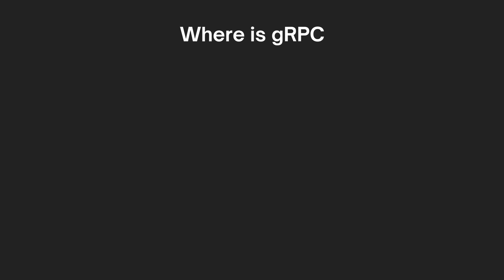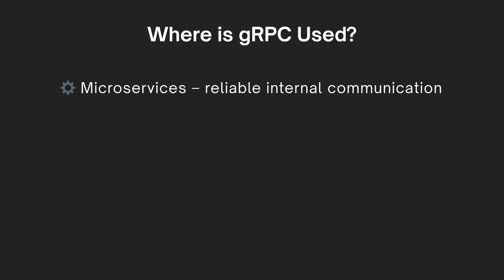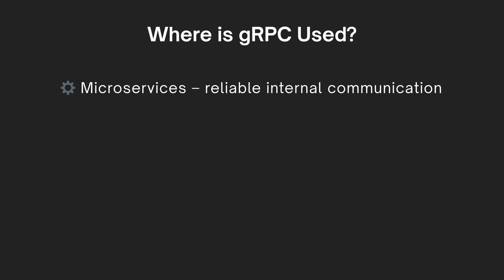Where is gRPC used? Let's look at where gRPC shines in the real world. First, microservices — gRPC is perfect for internal service communication. It's fast, type-safe, and scalable.